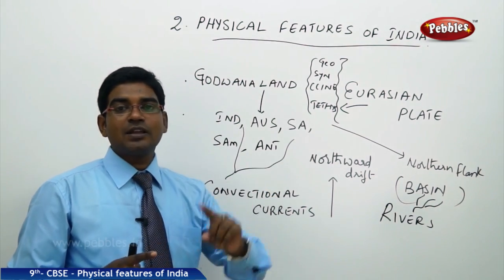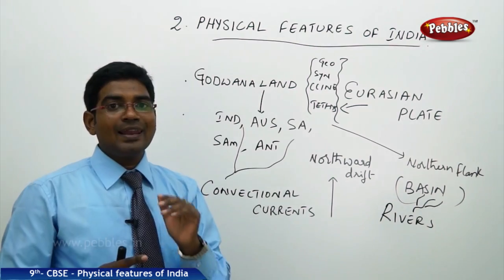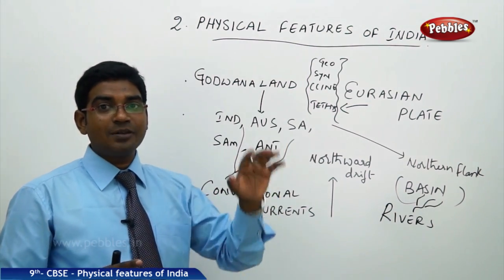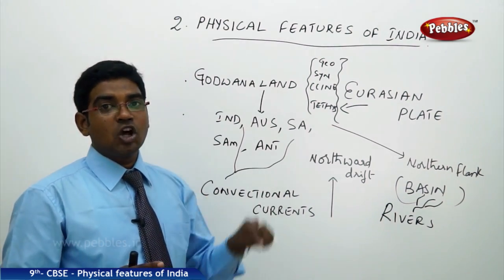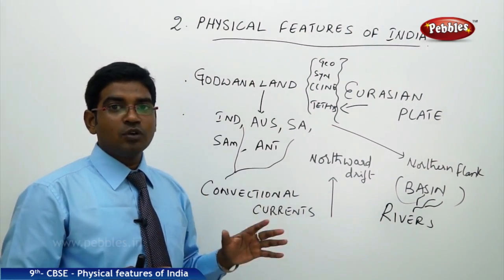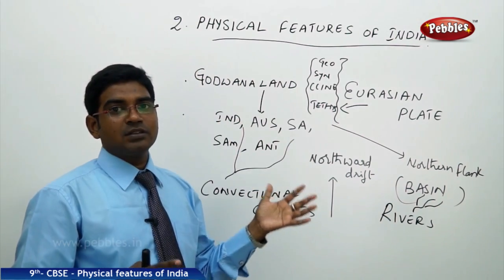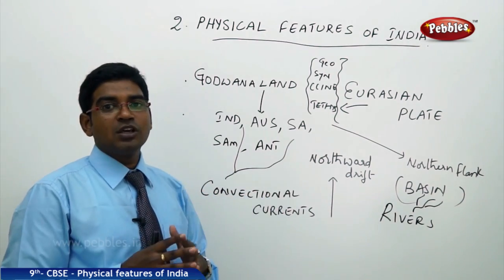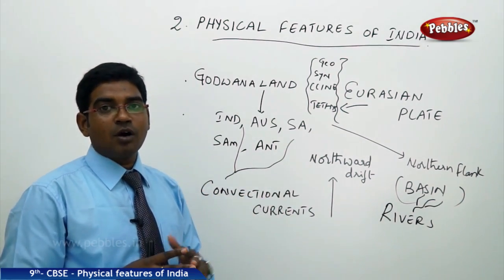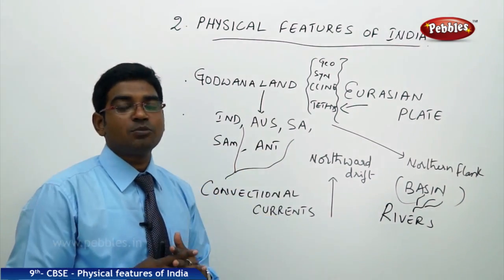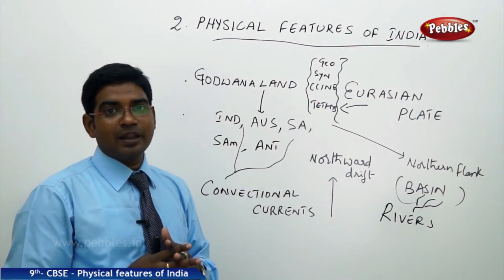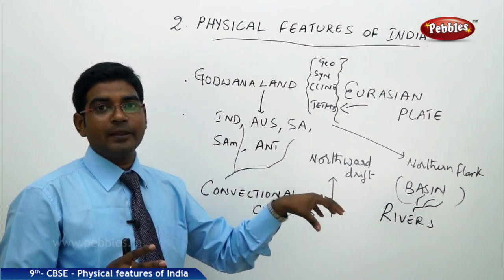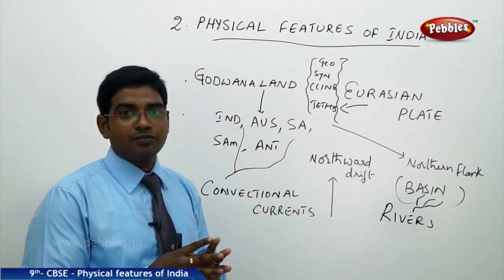The rivers which started to flow from the Himalayas caused large-scale soil erosion, and the eroded soil got deposited in the plains, resulting in the formation of the Northern Plains. These plains are filled with alluvial soil brought down from the Himalayas toward the south.